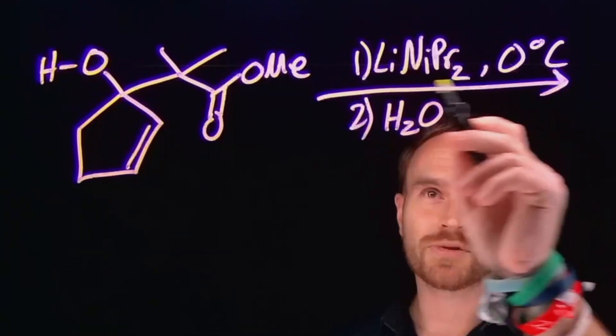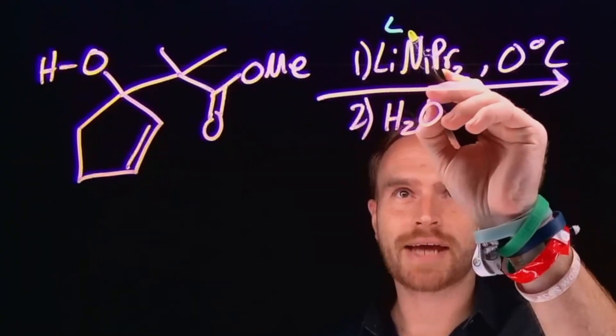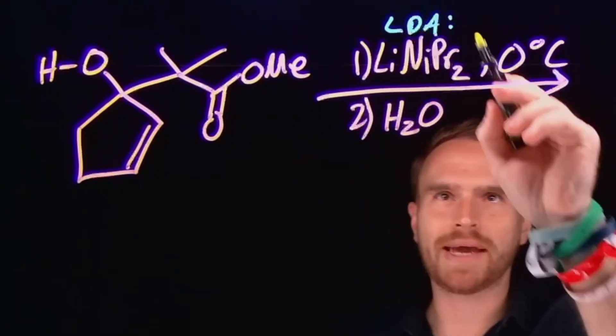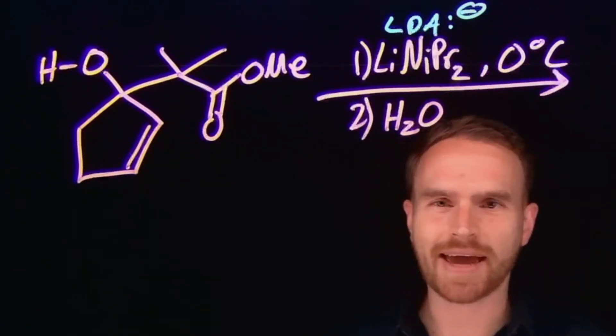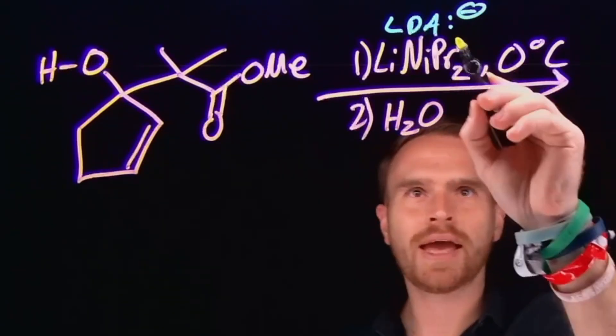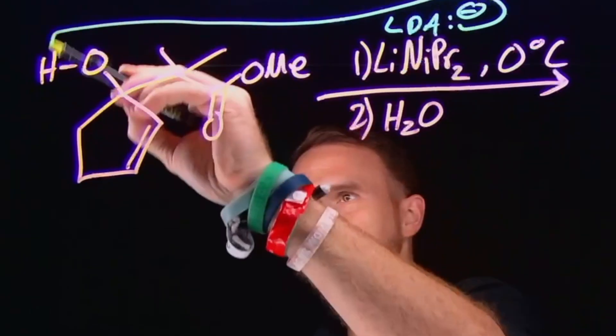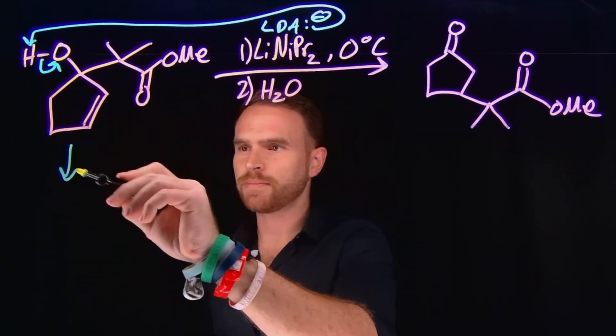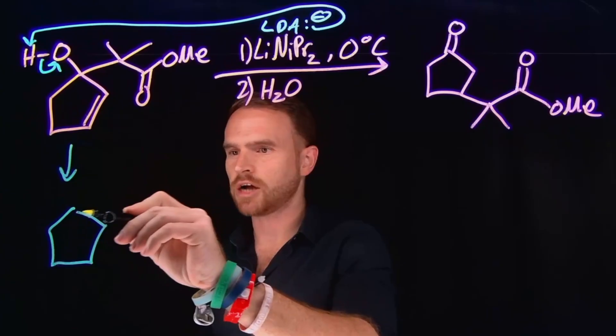And it all begins by using LDA. So lithium diisopropyl amide is a base that's commonly used when you need a big bulky base. We can think of this as LDA acting as a base. And what it's going to do is come and deprotonate this hydrogen from the oxygen atom. And that's going to give us our first intermediate where we end up with a negatively charged oxygen at that position.